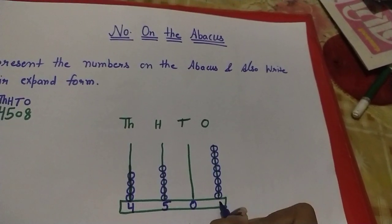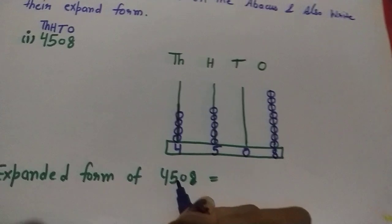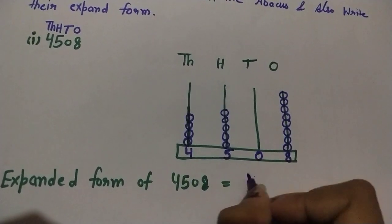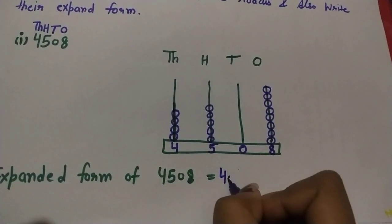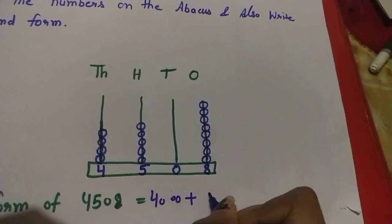So next we have to write it in expanded form. So how many thousands are there? 4 thousand plus 5 hundred plus zero plus 8.